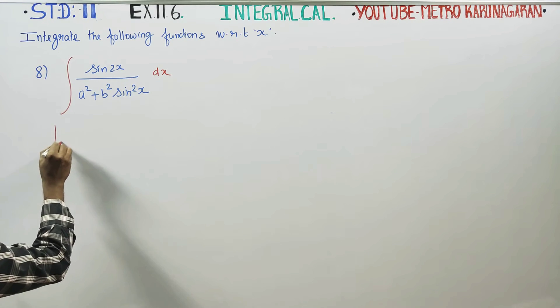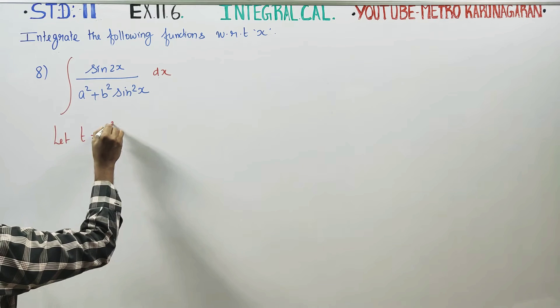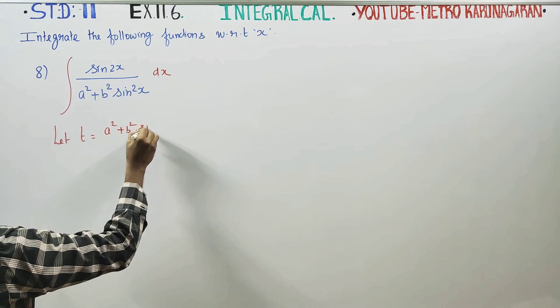Now, as I said, I am going to use my substitution method. t is equal to a square plus b square sine square x.